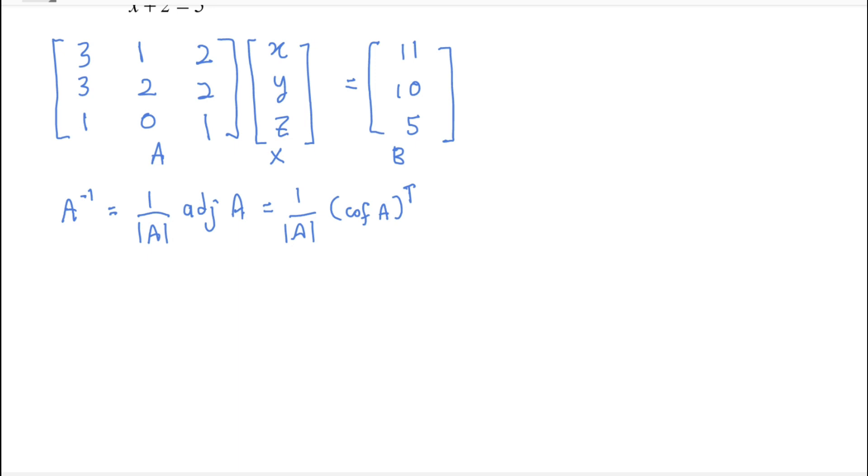So first we find the modulus A, which is the determinant of A, by using the third row because there is zero there to make your work easier. So by using third row we get plus one, one two, two two, minus zero.